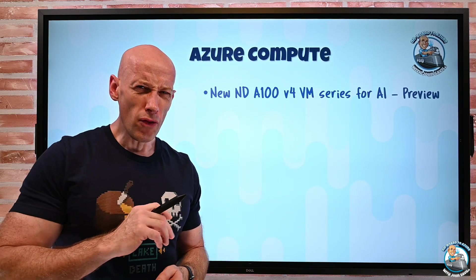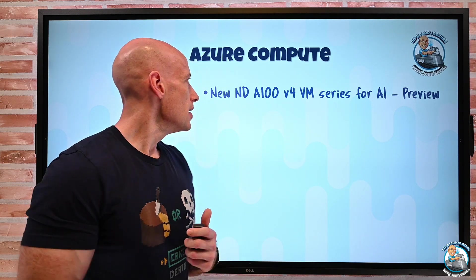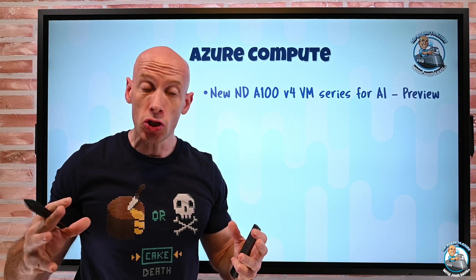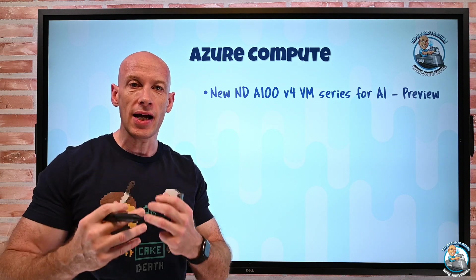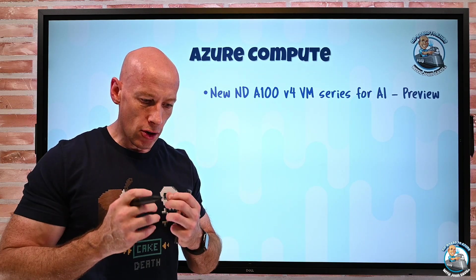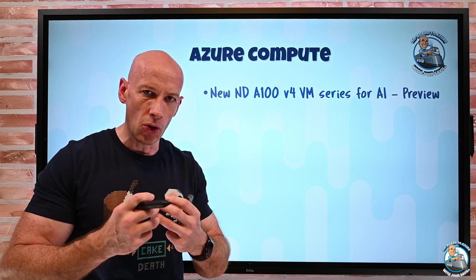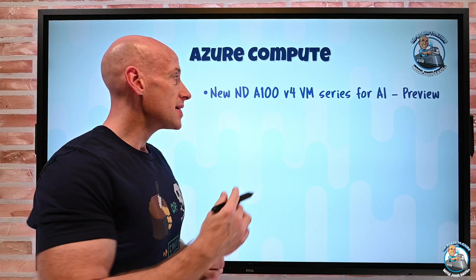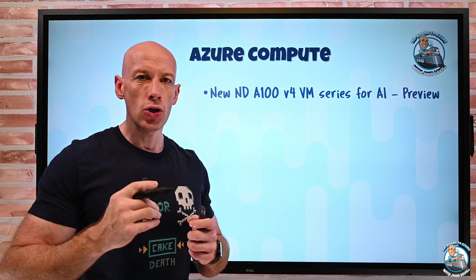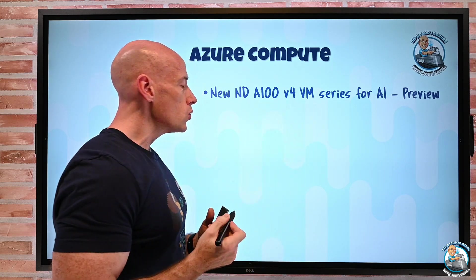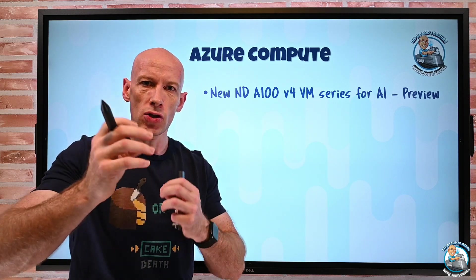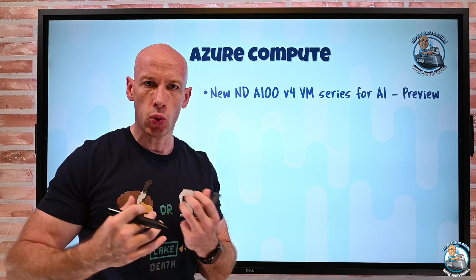On the Azure compute side, artificial intelligence and machine learning is everywhere today. There's a new NDA100 V4 VM series. I can start with a single virtual machine with eight NVIDIA Ampere A100 tensor cores, and grow these to massive clusters in the hundreds to thousands. This enables massive high-performing clusters for AI at scale using VM scale sets. There's also dedicated connectivity between the cores at 200 gigabits per second, giving massive throughput between them to enable these super clusters.